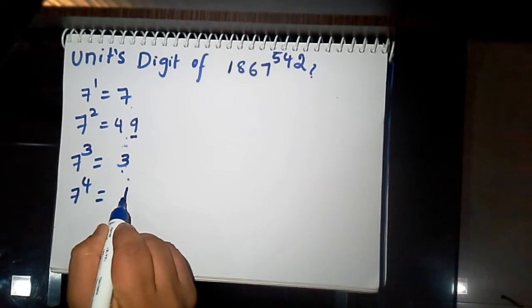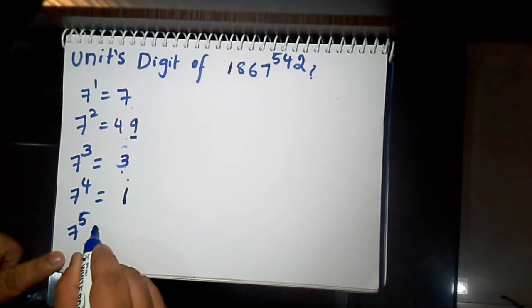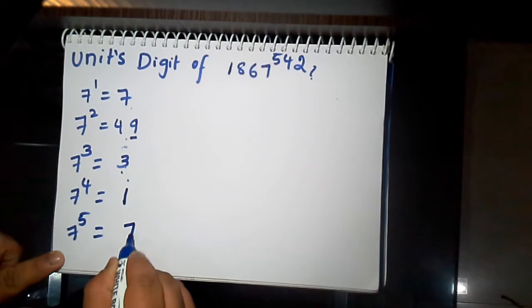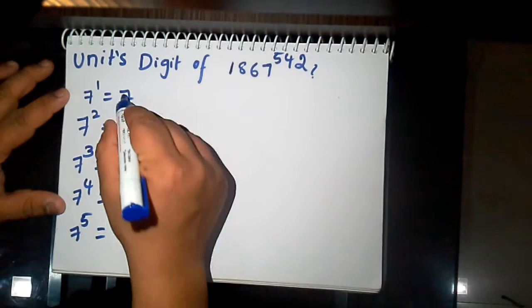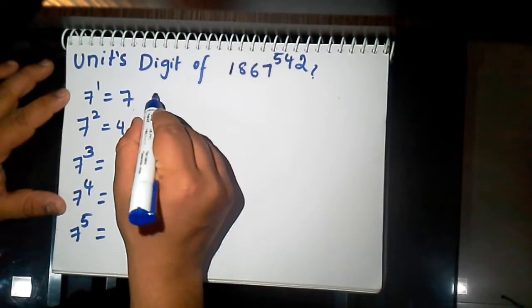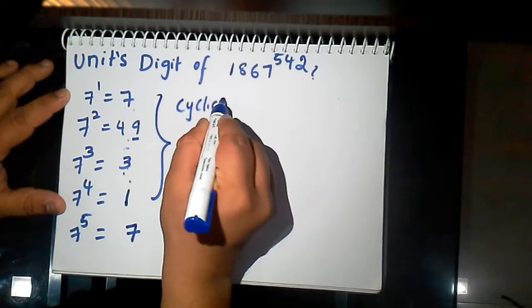7 times 3 is 21, which means 1. Now if you take 7 power 5, it will again repeat with the unit's digit value is 7. Now here for every 4 times it is repeating. Now the cyclicity equals 4.